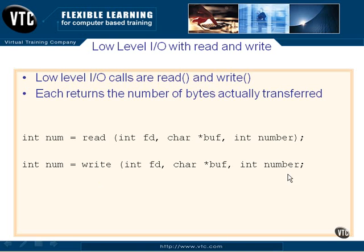Write is the same setup. You have the file descriptor that you're going to write to, the character buffer — the address of the zeroth element of the array that you're going to be reading data from — and then how many bytes you need to write. If you're going to write one character at a time, that's fine, but that's still going to slow things down. If you're doing writing, you most likely will set it to the block size of the device. If it's a 4096 block or a 1K block, or maybe you could set that to 80 or 81 bytes if you're writing 80-character lines.